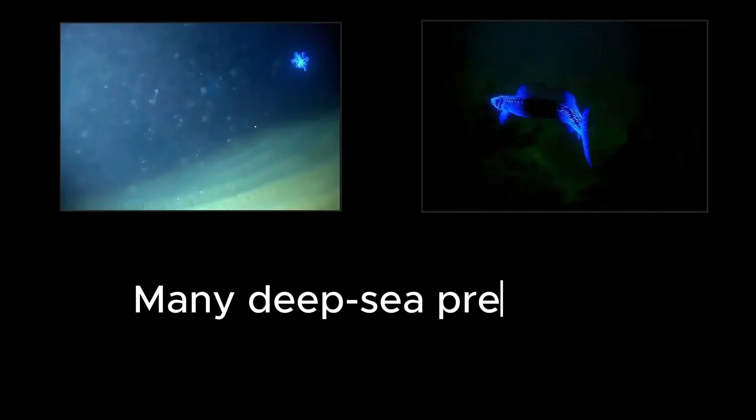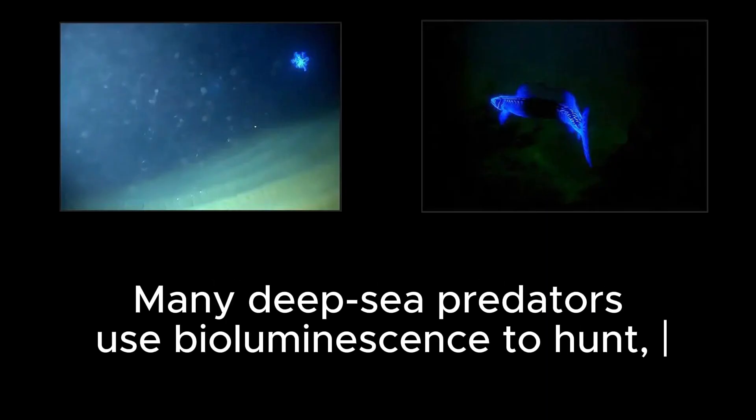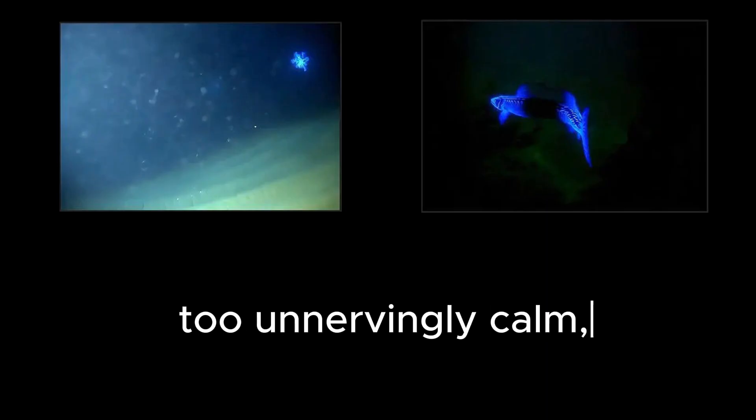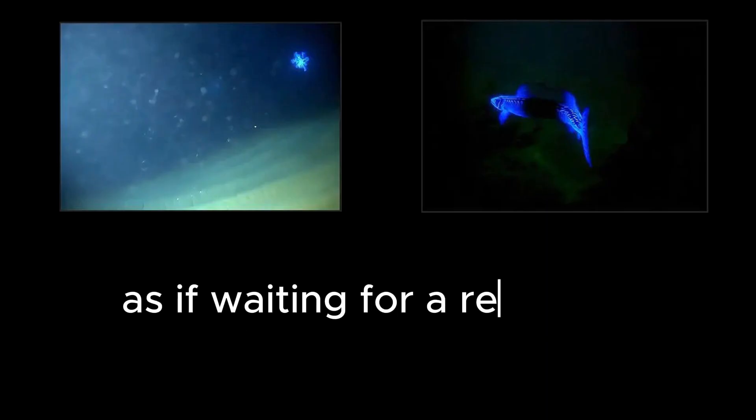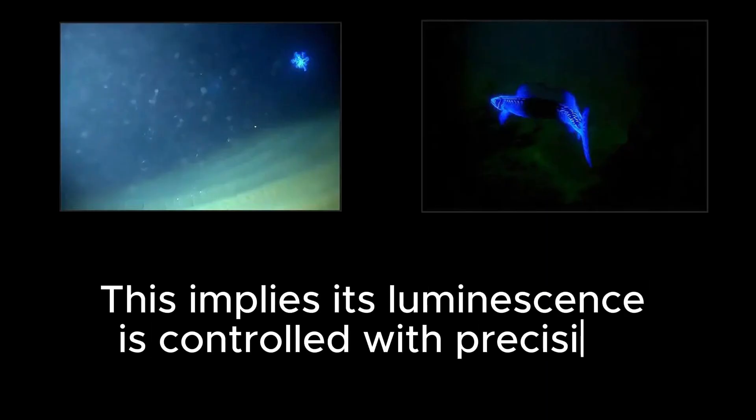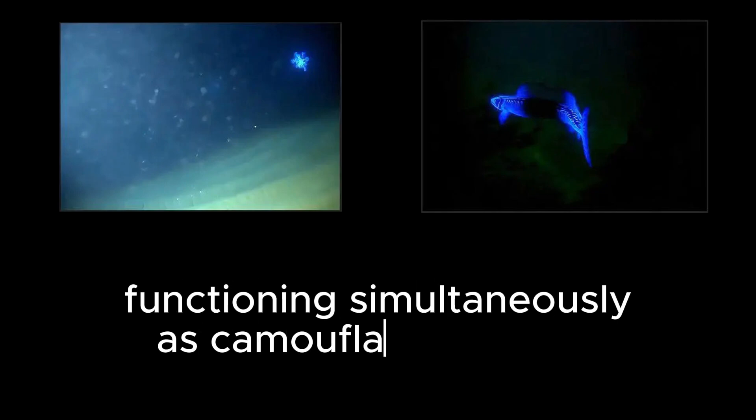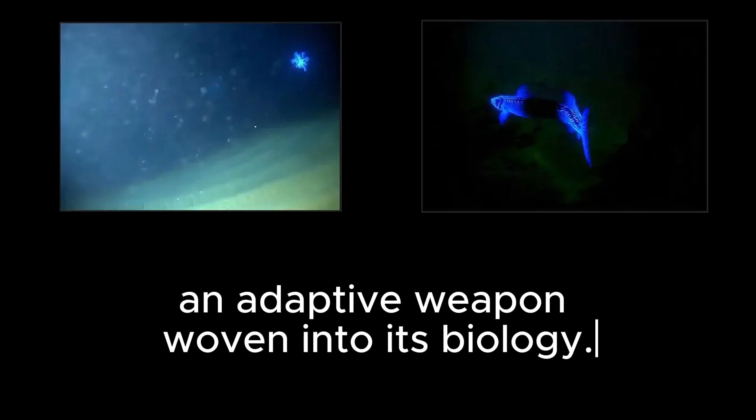Many deep-sea predators use bioluminescence to hunt, but the Orphid's glow behaves differently. Too steady, too unnervingly calm, as if waiting for a response before revealing itself. This implies its luminescence is controlled with precision, functioning simultaneously as camouflage and bait, an adaptive weapon woven into its biology.